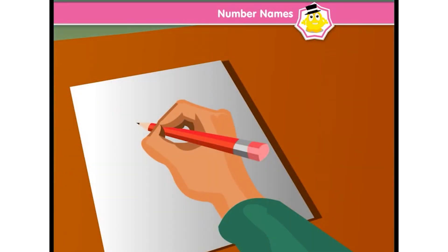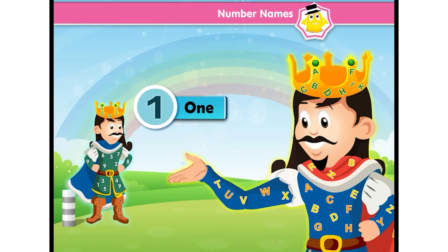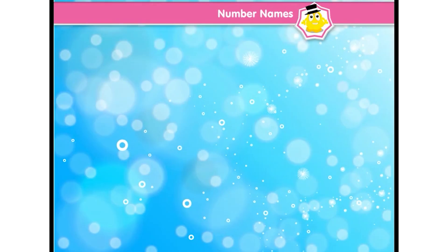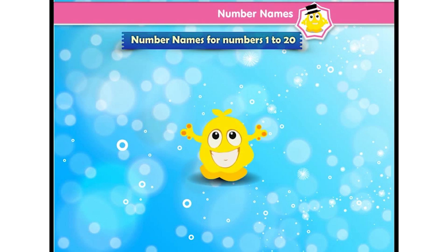So King Alphabet decided to give spellings to all the numbers, which became their names. We will see number names for numbers 1 to 20. Listen to it carefully and try to memorize it, as some are like sight words only.